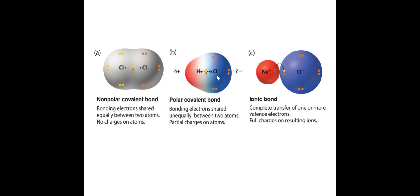If the difference in electronegativity is so great, instead of sharing, one electron is going to be transferred. When an electron is transferred that creates an ionic bond, because you're creating two ions - one positive, one negative. When we're talking about ionic substances, we don't discuss polarity - polarity doesn't really apply to ionic substances.